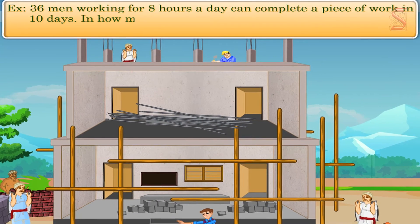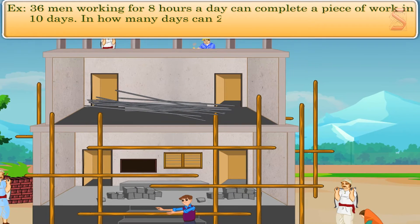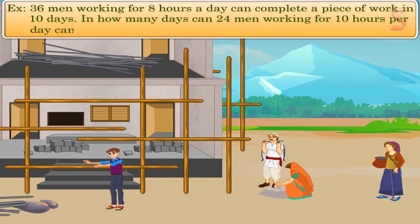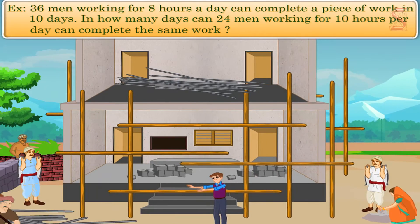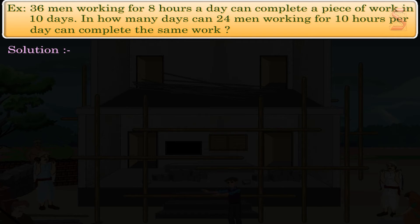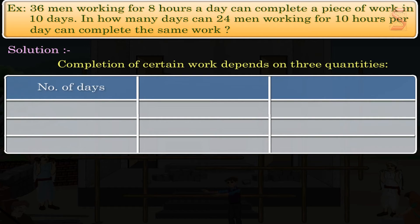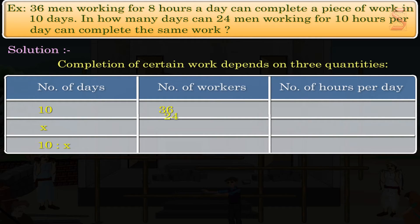In how many days can 24 men working for 10 hours per day complete the same work? In the given example, completion of certain work depends on three quantities: 1. Number of days, 2. Number of workers, 3. Number of hours per day. Let us frame the table for the given information.